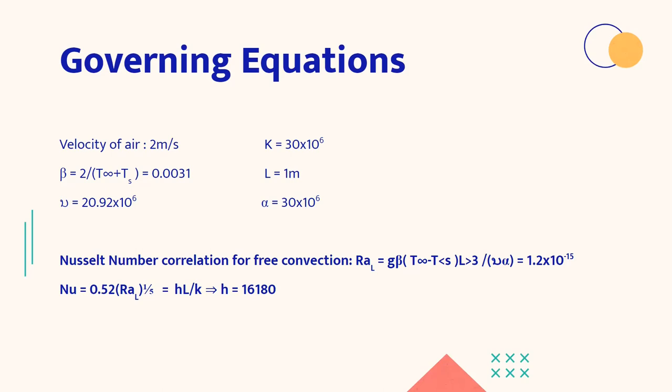So beta, the value of beta would become 0.0031. And we have found the value of nu, nu is 20.92 into 10^6. So we have considered the Rayleigh number correlation and we have found the value of Nusselt number, and then the value of h which is the convective heat coefficient to be 16180.